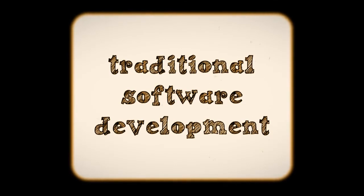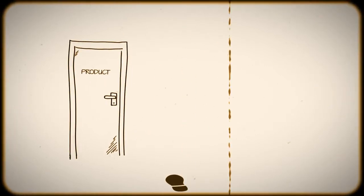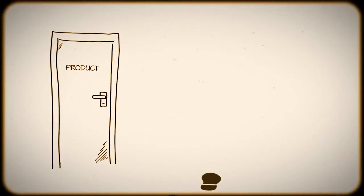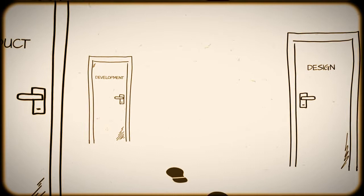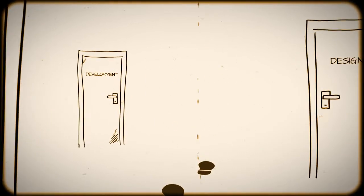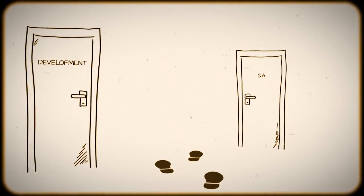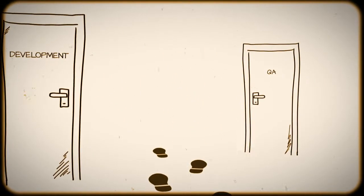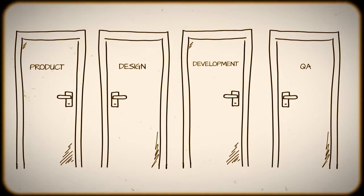Traditional software development models are so 2008. First, the product team writes up the requirements, followed by a corresponding design document. Then, development gets to work coding. Finally, QA gets the product to test before release. It's all very linear, very orderly, and very slow.